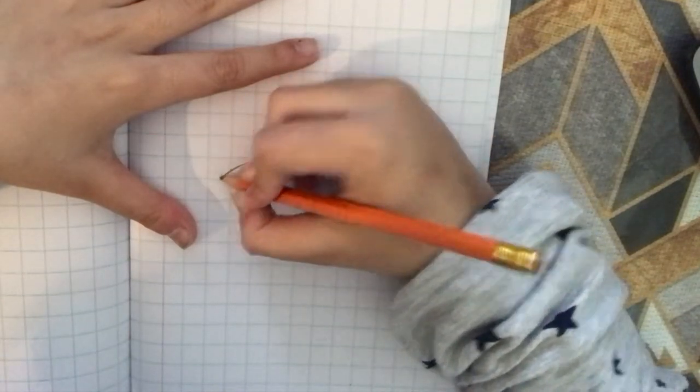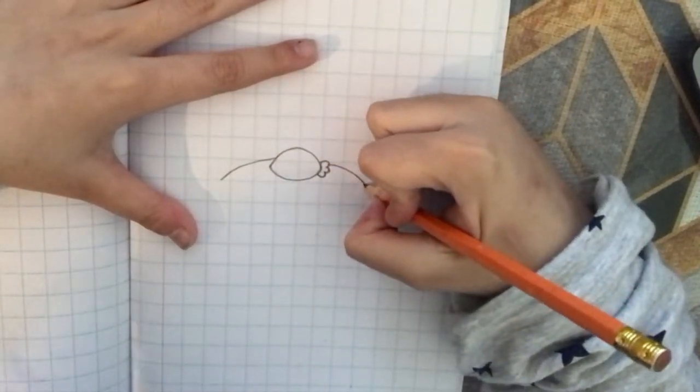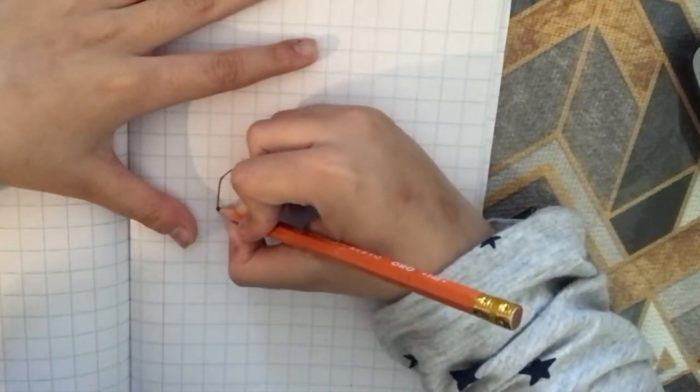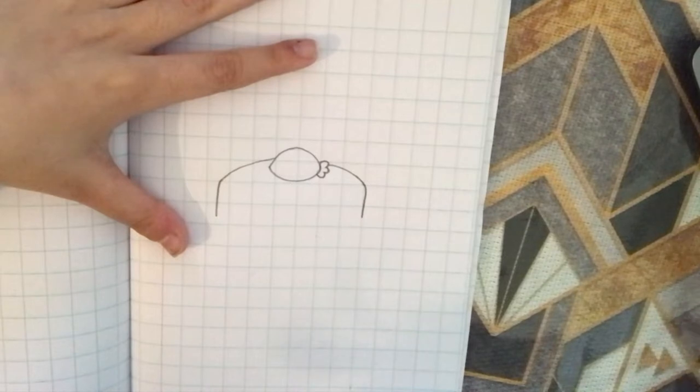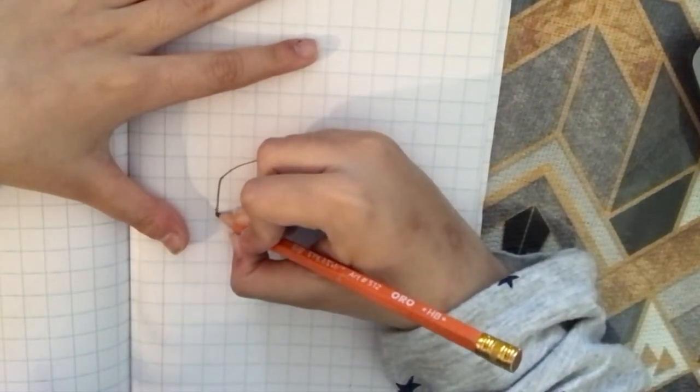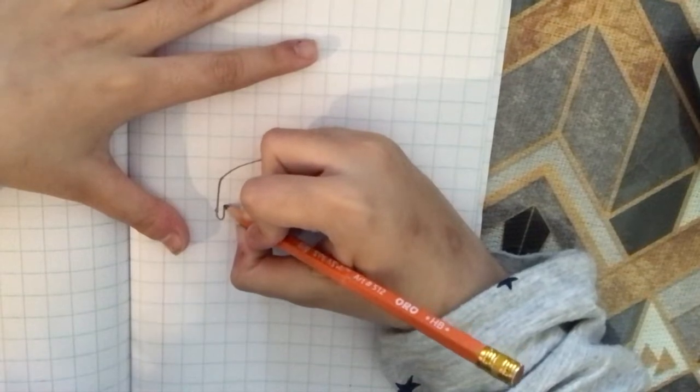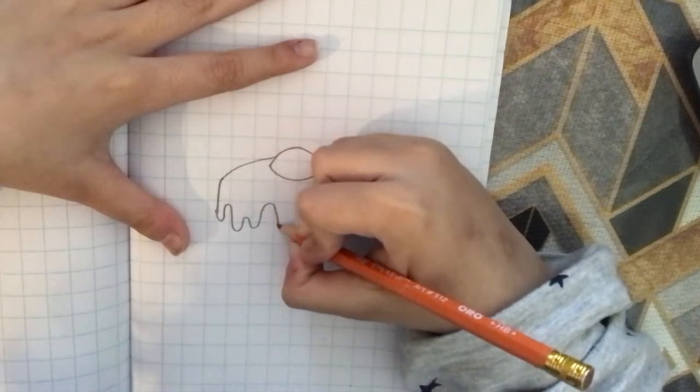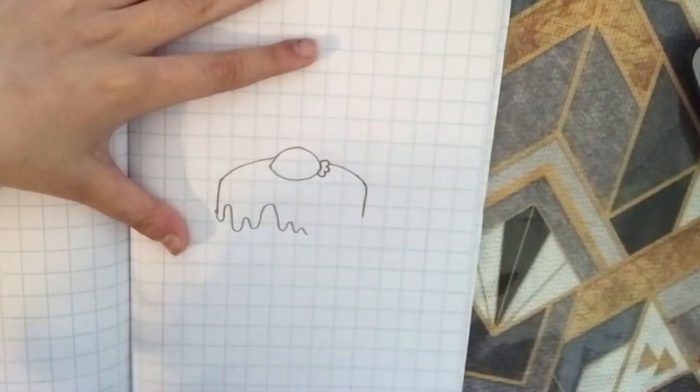And we're going to draw the top for the frosting. Next, we're going to draw a line that comes down on each side. And we want to make this icing, so we're going to draw some wiggles over there, starting right towards the middle.